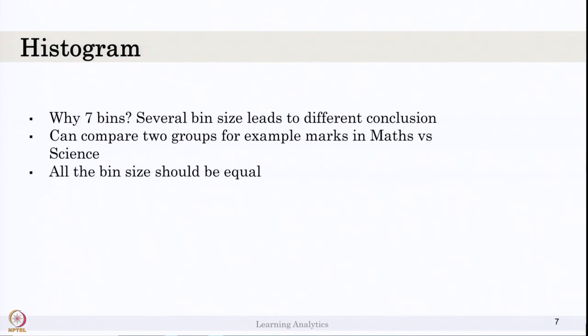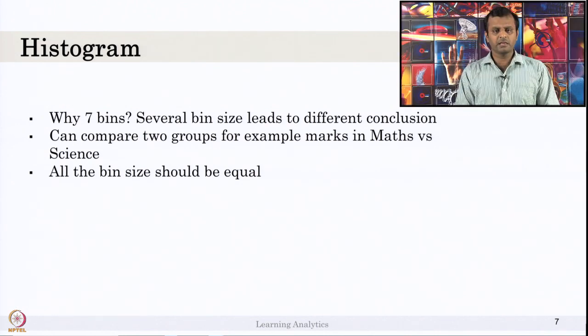In the last slide, we saw 7 bins. Why are there 7 bins? Did you ask why there are 7 bins? And why the marks are distributed across 28 to 38 and 88 to 98? Why cannot we have only 5 bins? Why we cannot have only 3 bins, say less than 40, 40 to 80, 80 to 100? Why we have 7 bins?